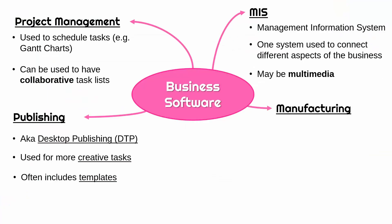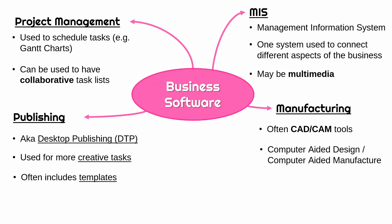Manufacturing is a particular sector where we are making physical products. Nowadays this will usually involve CAD/CAM tools. CAD stands for Computer Aided Design and CAM stands for Computer Aided Manufacturing. You could have one or both of those in your company. Using a computer often means what you are making ends up being more accurate, because humans make mistakes whereas a computer doesn't unless it's told to. These tools can also be cheaper because you can test things really quickly on a computer without having to physically make a prototype — you can test it virtually without wasting money or time.